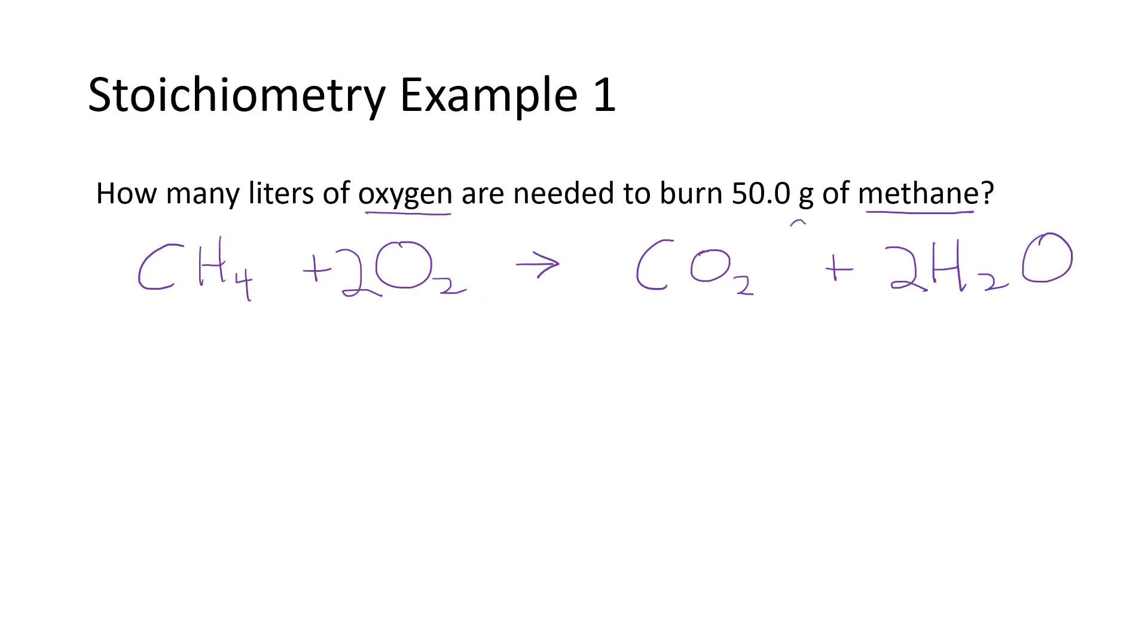Since I'm seeing grams with methane, that means that I'm going to have to use the molar mass. So to calculate the molar mass of methane, I'm going to do that up here at the top. There's one carbon, which weighs in at 12, and there are four hydrogens, which weigh in at one. So that's going to be 16 grams for the molar mass. So now to get this process started, we're going to start by writing down the number, the unit and the chemical that we're given. So 50 grams of methane. We're going to place that over one.